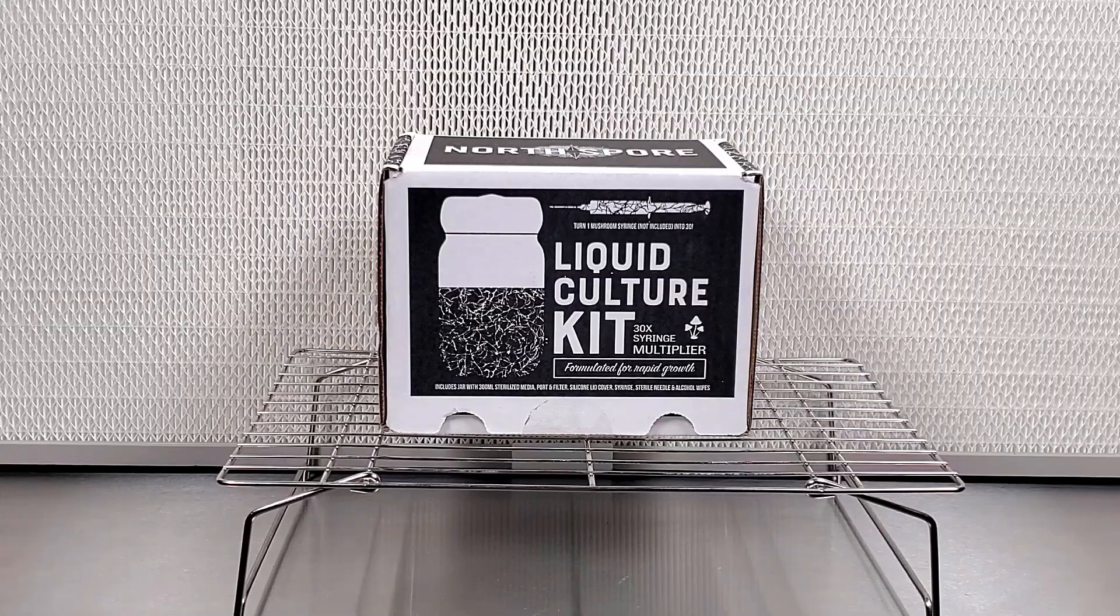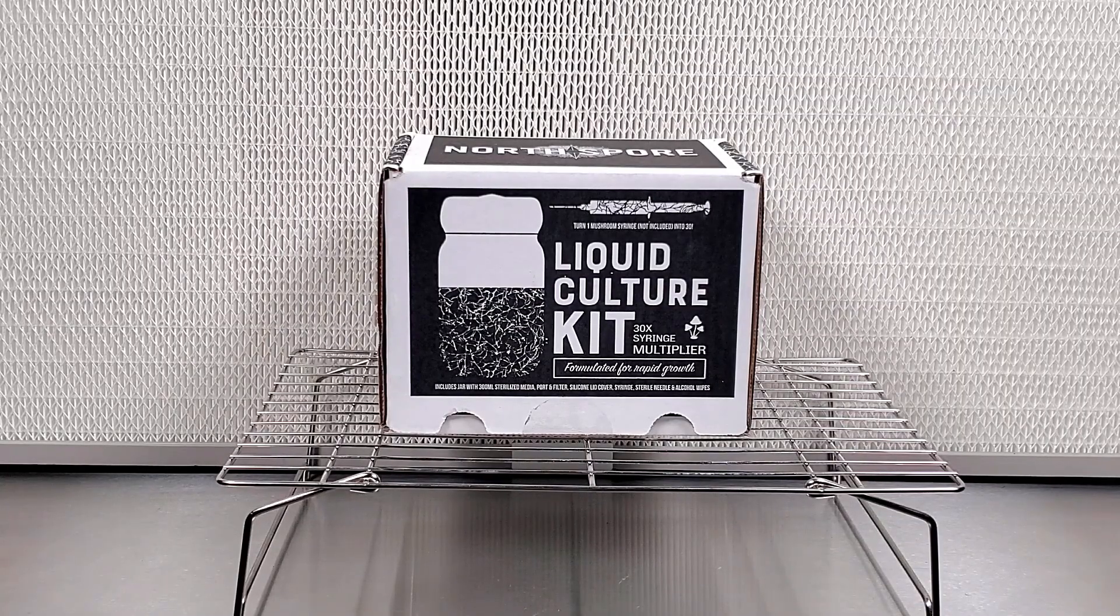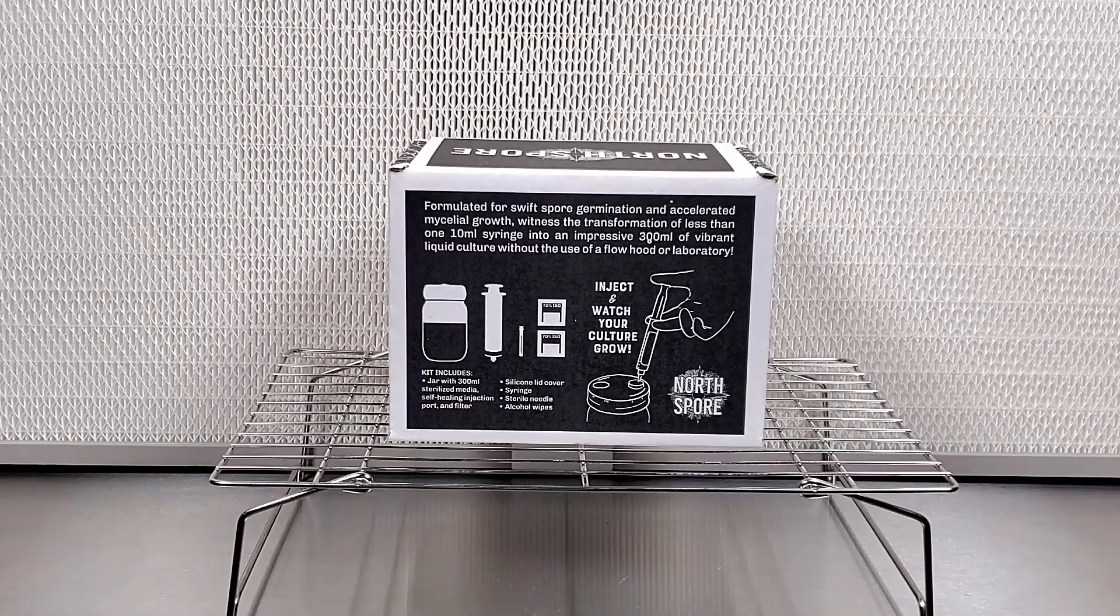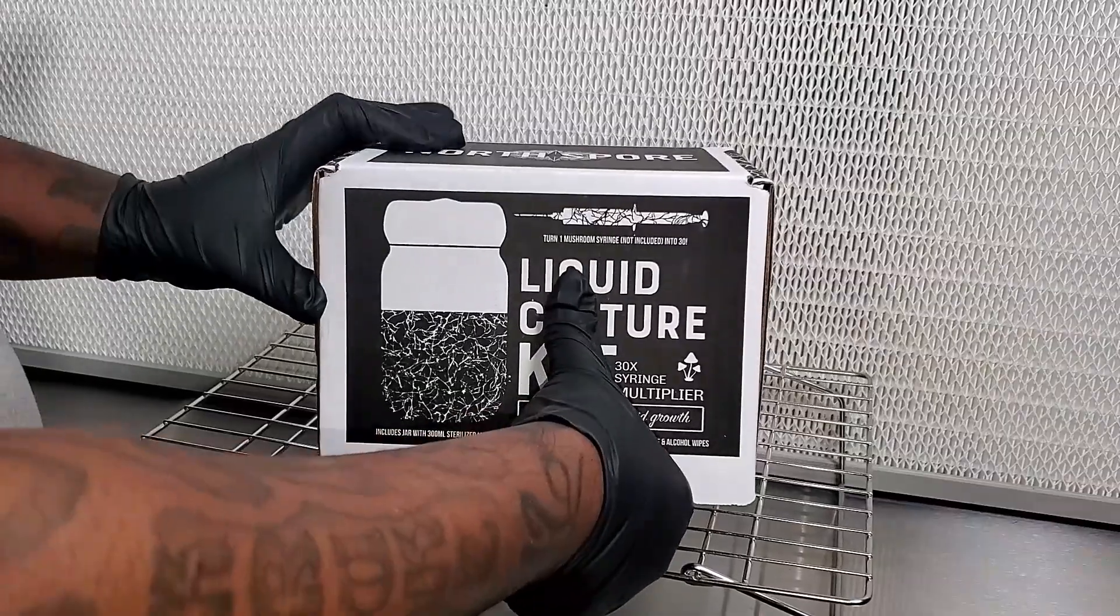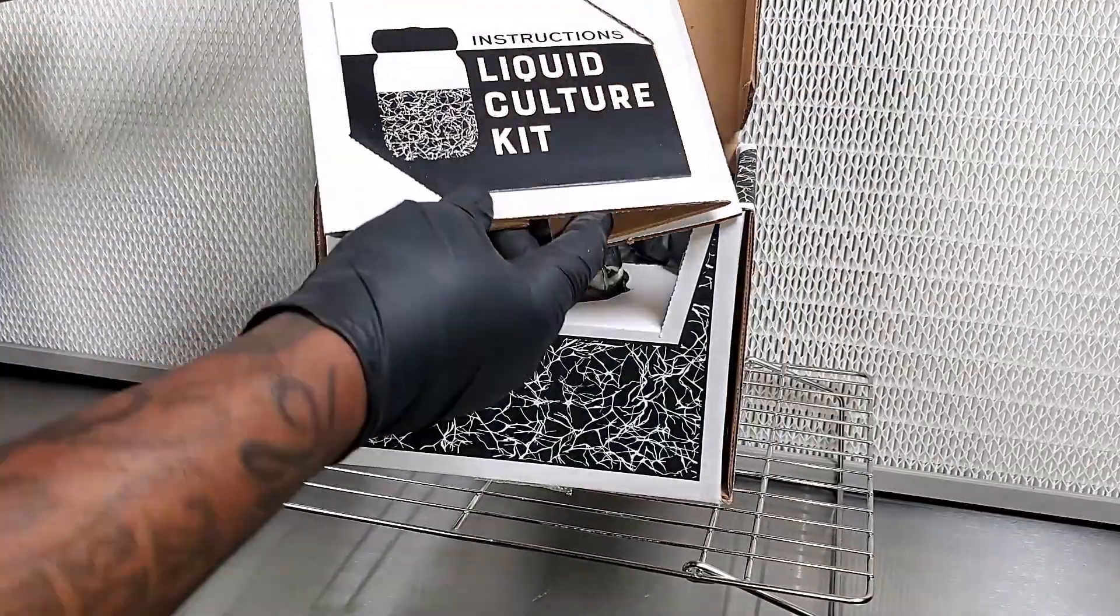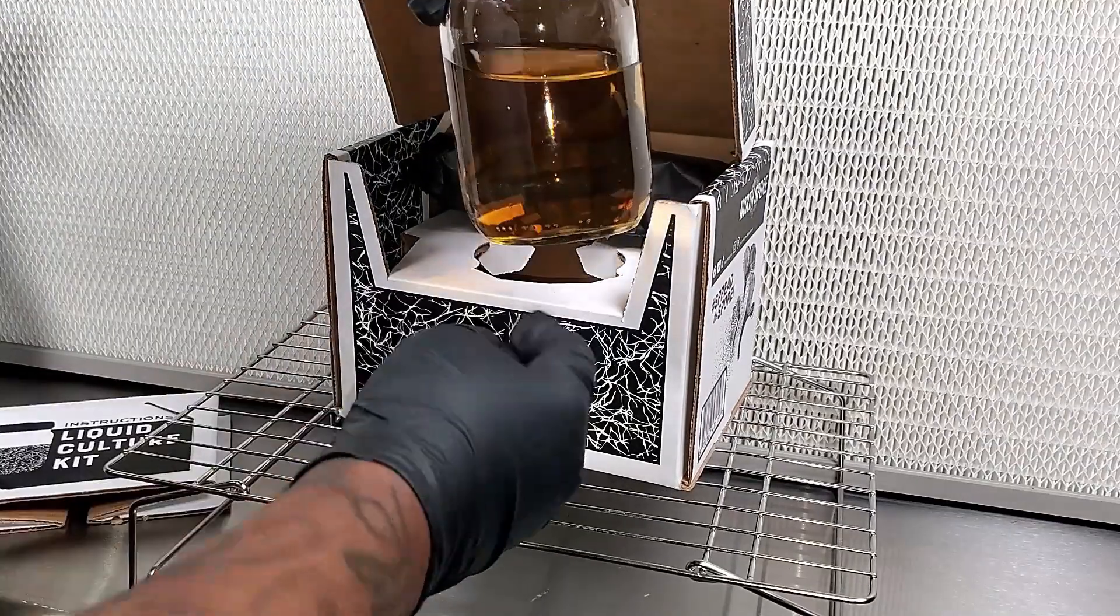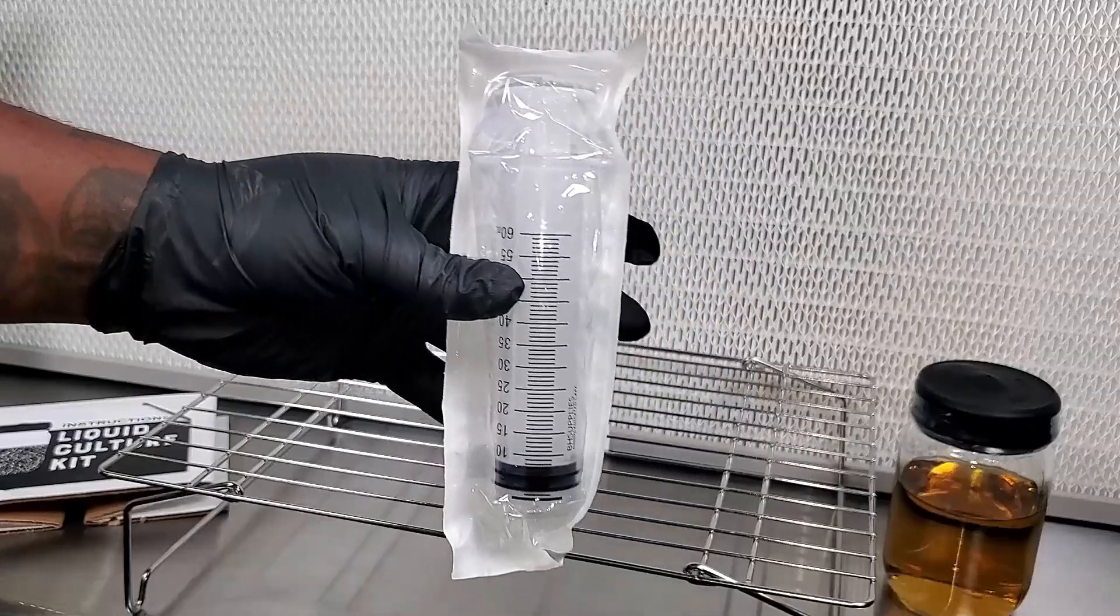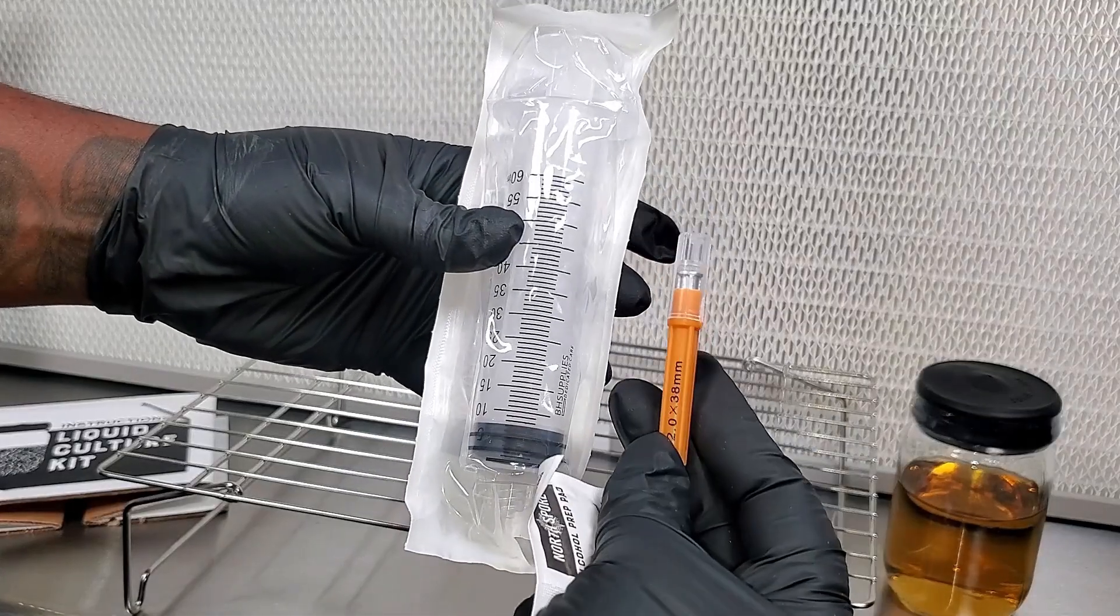Let me give you the backstory. PGT, Philly Golden Teacher, was kind enough to send me a great package with some great genetics. What I want to do is I want to take one of the syringes that he sent me and expand it. The liquid culture kit includes a jar with 300 milliliters of sterilized media, the lid with the self-healing injection port and a micron filter, a reusable silicone jar lid cover, a sterile 60cc syringe, a sterile 14 gauge needle, two alcohol wipes, and of course the instruction manual.